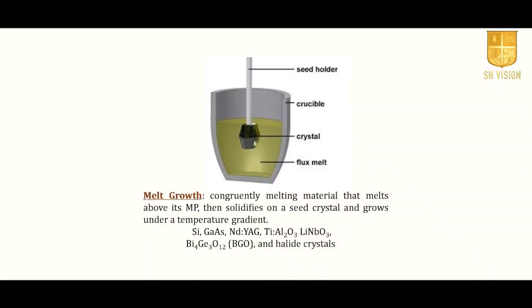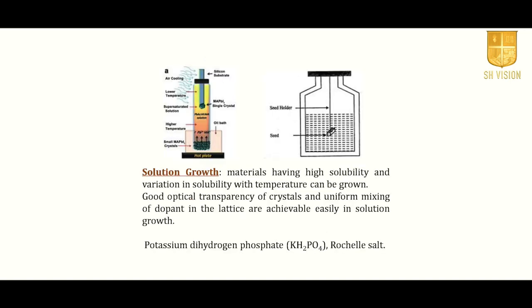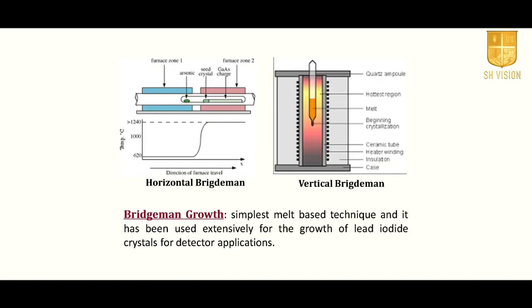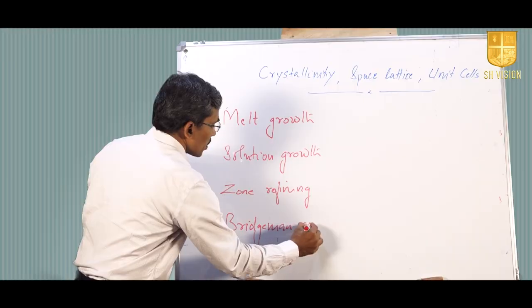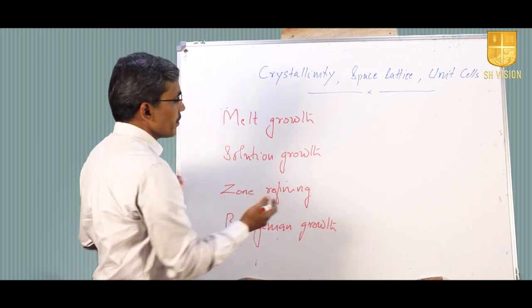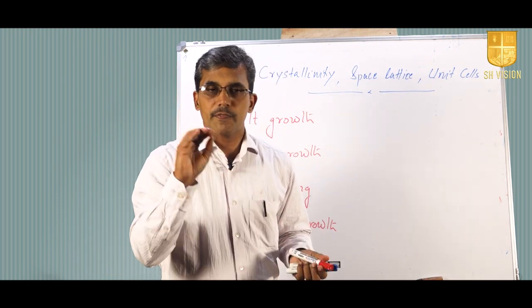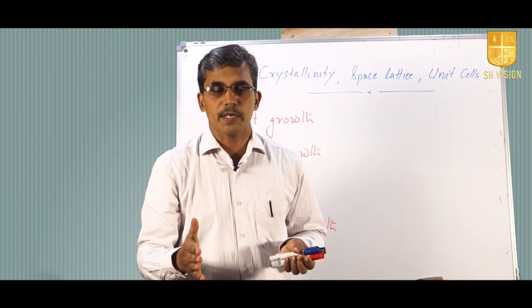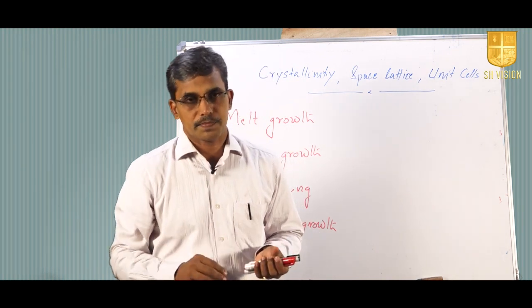For example, there is melt growth, solution growth, zone refining, Bridgman growth, and others. There are different growth techniques available and for each growth technique there will be certain parameters — certain fixed temperature, pressure, and other conditions which need to be monitored.